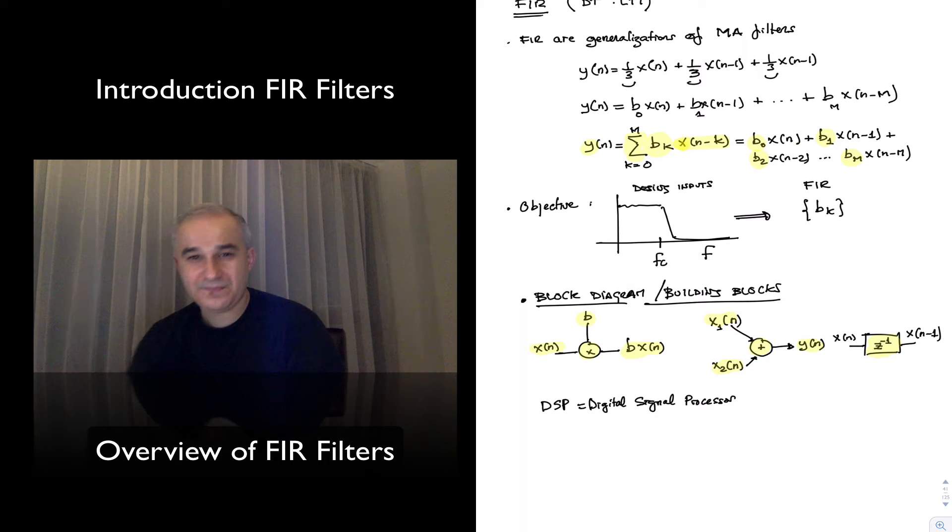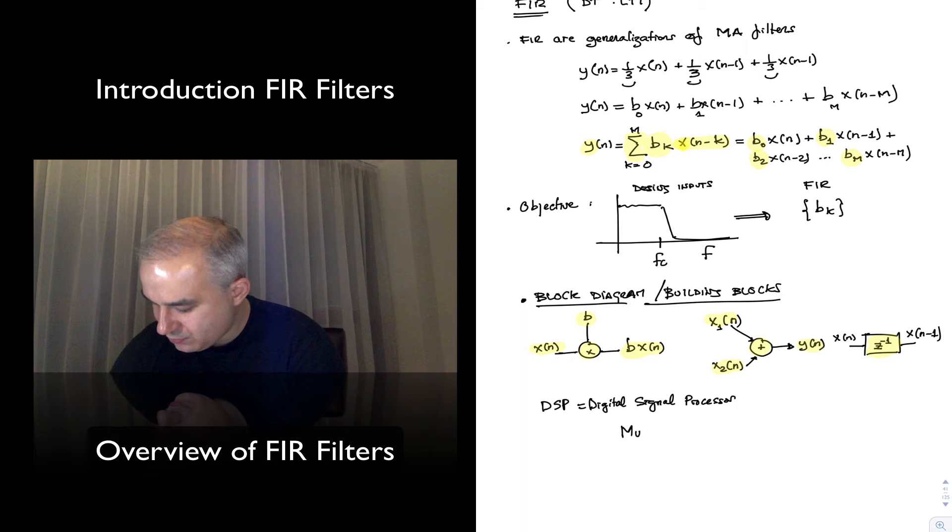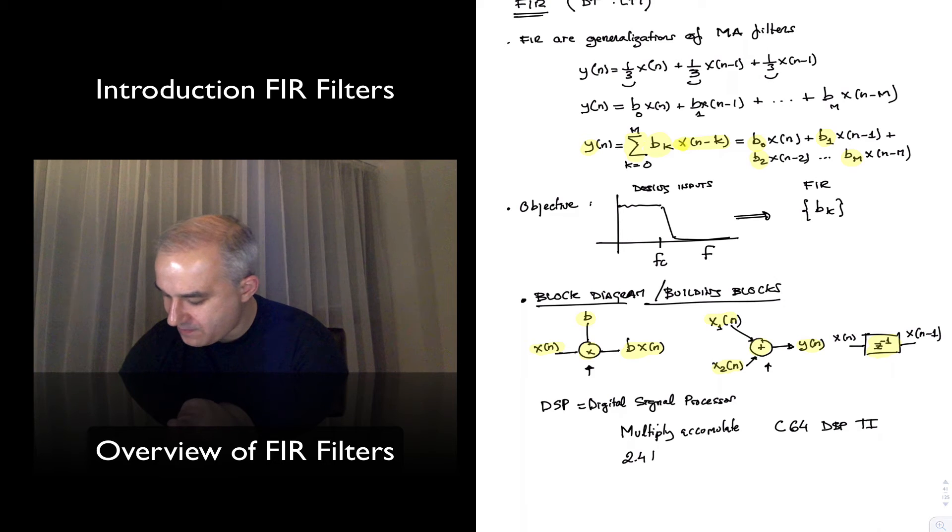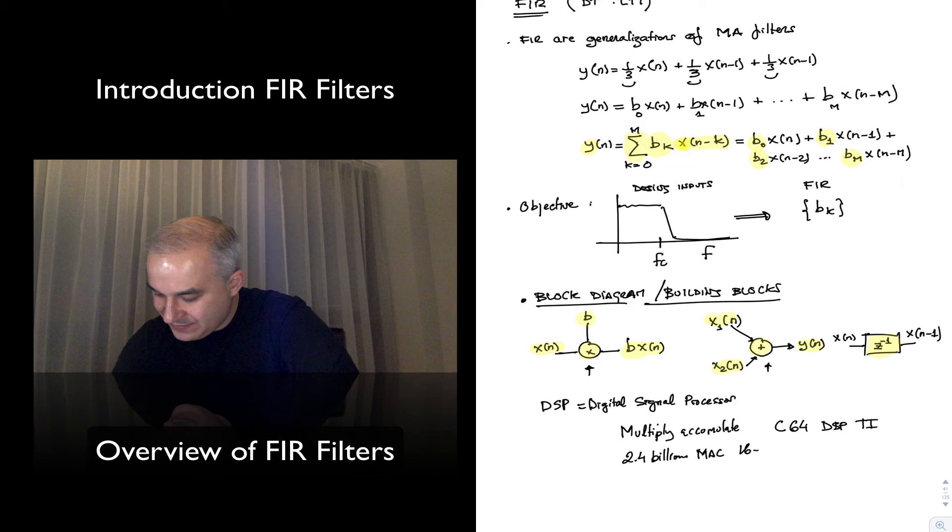For instance, this multiplication and this addition, in DSP algorithms, you need to do one after the other very often. And so there is this multiply-accumulate operation. Which, just to give you an example, the C64 DSP processors of Texas Instruments, they are capable of doing this multiplication here and this addition, one after the other, and storing it, like what we have here to implement some of these filters. You need to use 2.4 billion multiply-accumulate operations 16-bit per second.